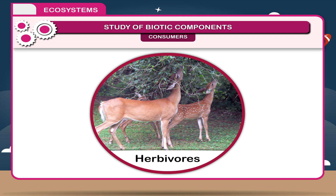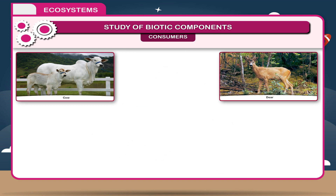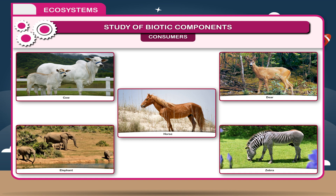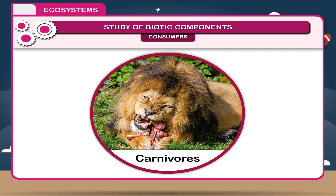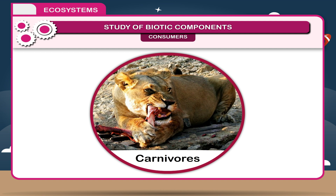Herbivores — these animals feed on plants and are called the primary consumers. Examples: cow, deer, horse, elephant, zebra. Carnivores — these animals feed on herbivores and are flesh eaters. These animals catch their prey and then eat it. They are called predators.